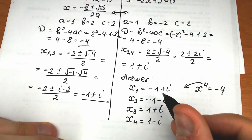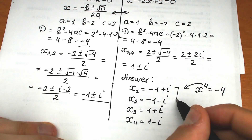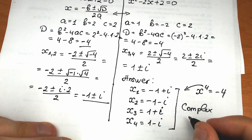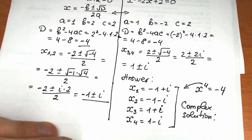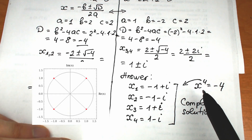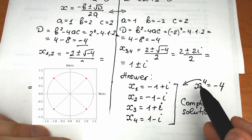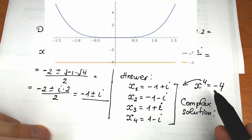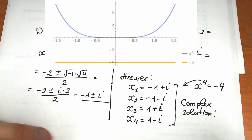We could have found 2 or 3 solutions, but no more than 4 roots. These are all complex solutions. As you can see from the graph, x to the fourth power does not intersect with the negative constant, so there are no real solutions. In complex numbers, however, we have 4 complex roots.